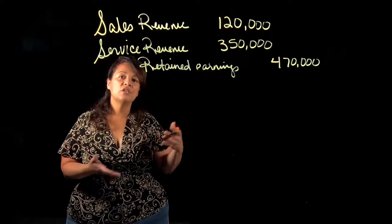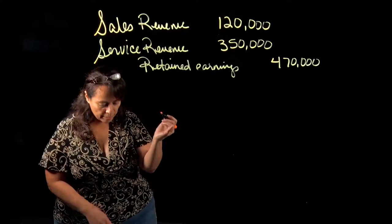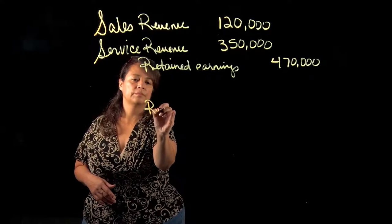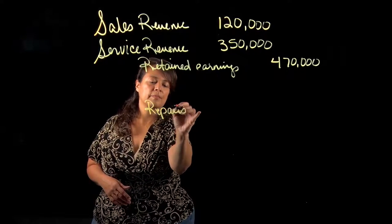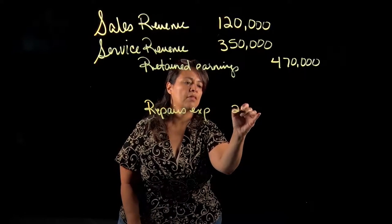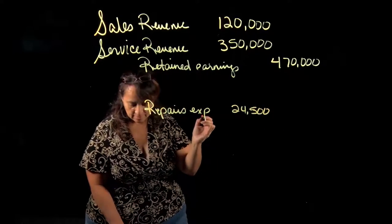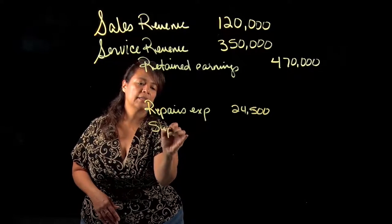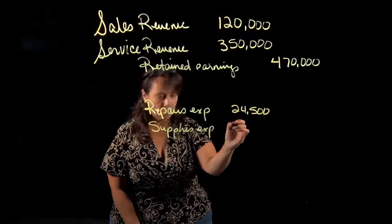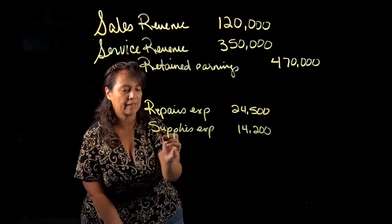The first credit is going to be to repairs expense for $24,500. Then supplies expense for $14,200. These numbers are coming straight off of your trial balance.